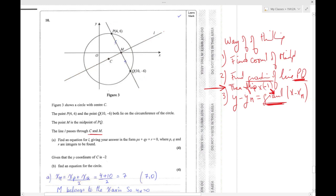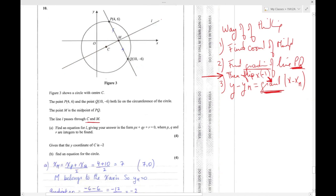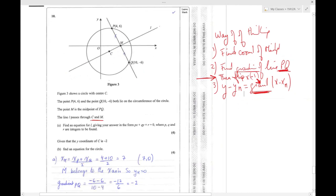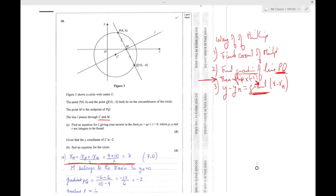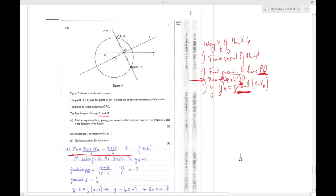To find the midpoint, I just solved and found X. Why did I only find X? I didn't find Y because Y belongs to the X axis. Because Y belongs to the X axis, its ordinate or its Y is 0.